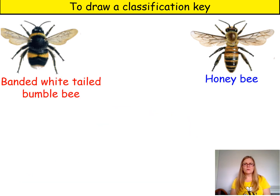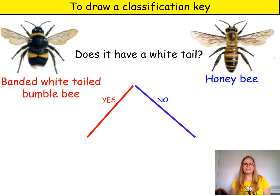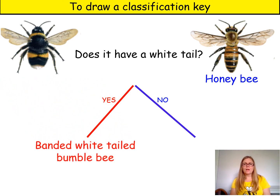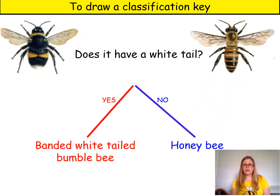So a better question would be: does it have a white tail? For the banded white-tailed bumblebee the answer is yes, whereas for the honeybee the answer is no. So the question separates the bees.